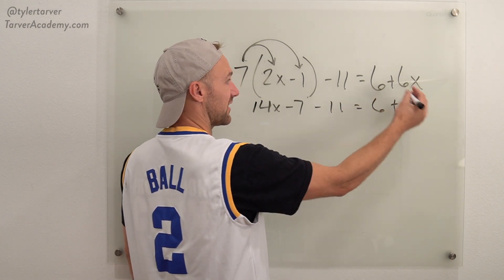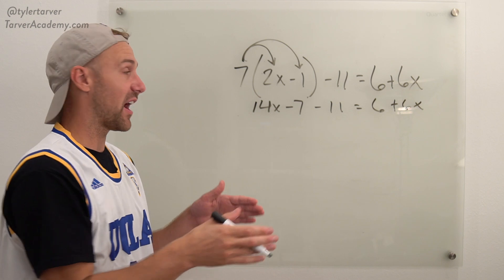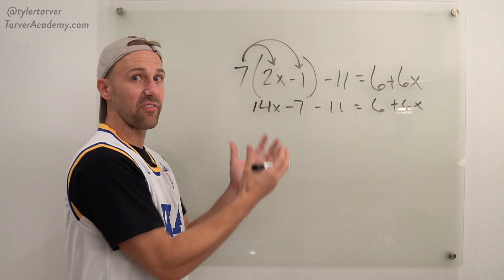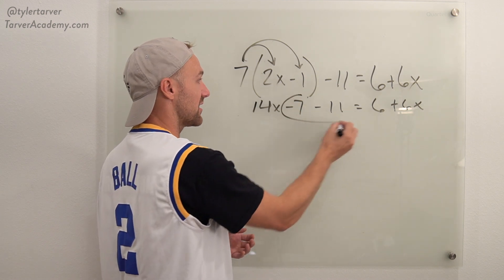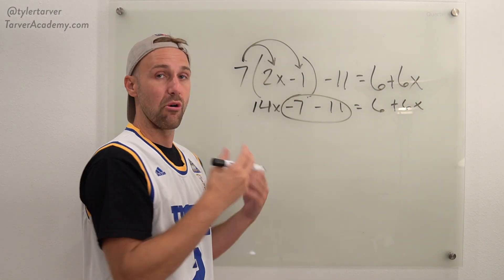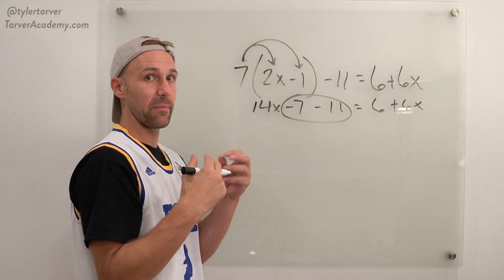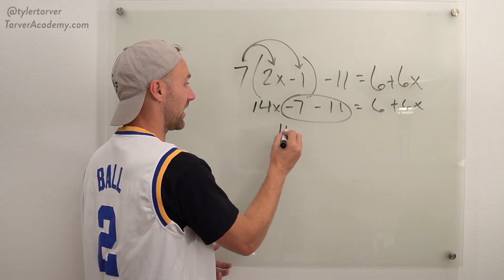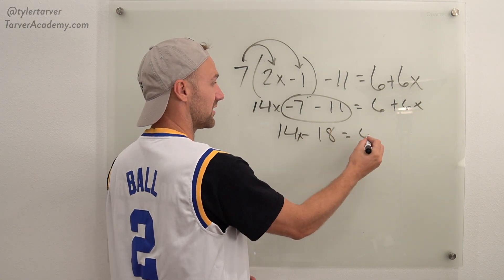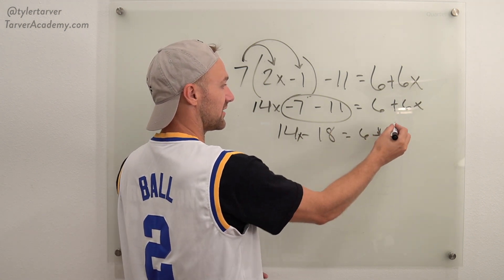Okay everything else stayed the same. Now I can simplify before I start going across my equal sign with stuff. I can simplify on one side. So this negative 7 minus 11 I can simplify that. What's negative 7 minus 11? It's a negative becoming a larger negative so it's negative 18. 14x - 18 = 6 + 6x.